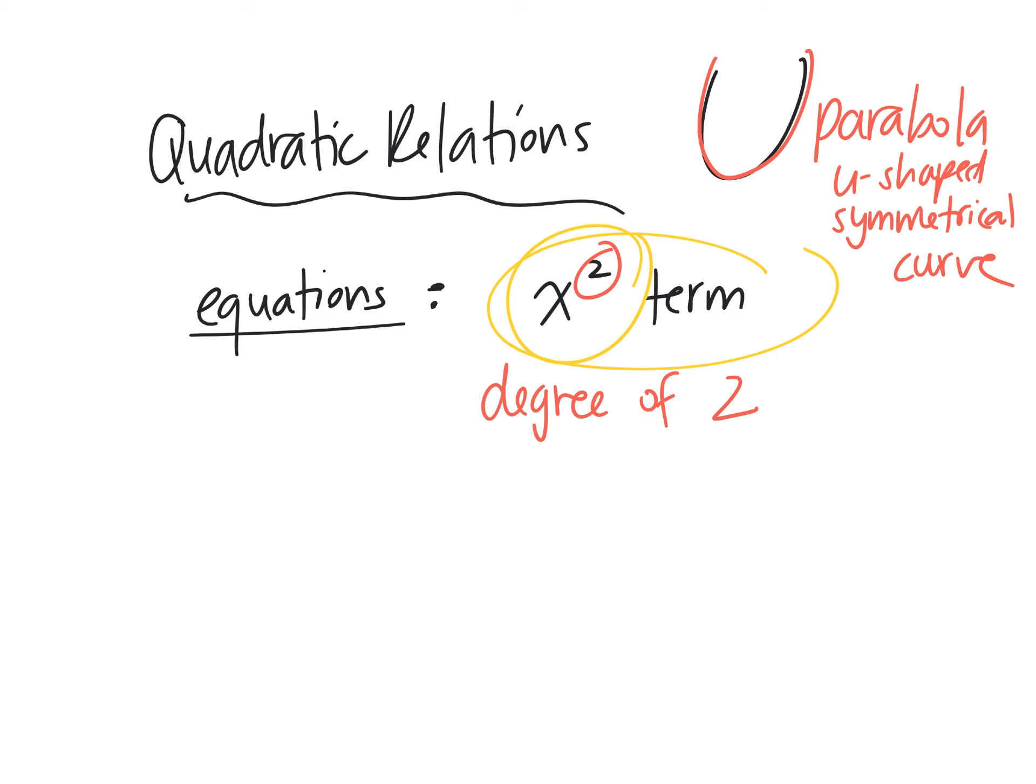If it has x to the power of 3, which somebody mentioned, no, that will not give you a U-shaped curve. Try it in Desmos right now. Anytime you have a quadratic equation, the graph will always be a parabola. That's the name. This is the name of the graph. It's called a parabola.